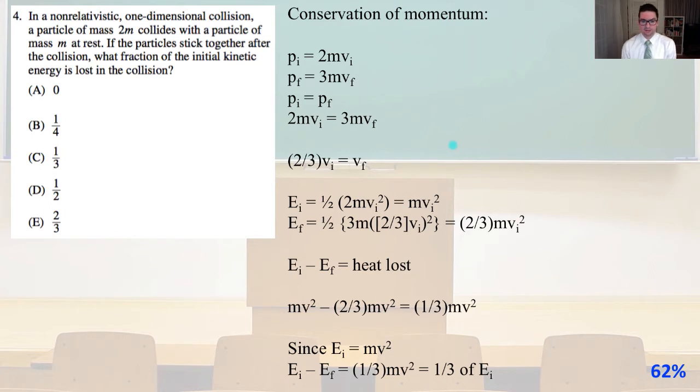The initial energy Ei equals one-half times 2mvi², which equals mvi². The final energy Ef equals one-half times 3m times (two-thirds vi)². So the final energy equals two-thirds mvi².